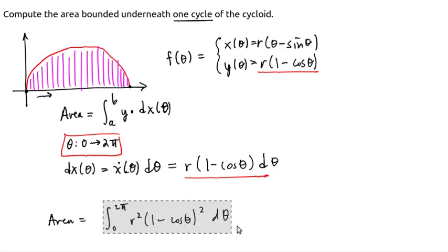So I'll copy this integral, give us some more room, and then we can actually work it out. So here's our integral. Remember, r is a constant in this scenario. So that r squared can come out, our integral from 0 to 2 pi. And we want to multiply this out. So this is 1 minus 2 cosine of theta plus cosine squared theta d theta.